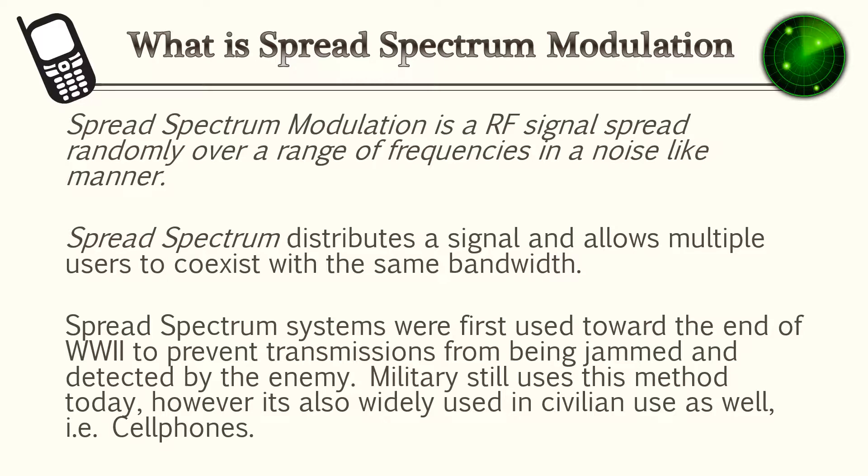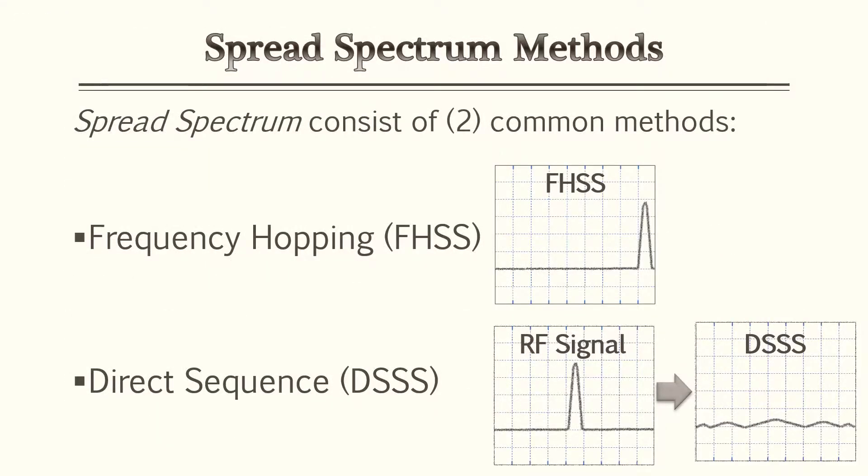The signal is being distributed randomly over the whole bandwidth. In other words, you're making it very difficult for someone to eavesdrop or jam your signal — hence why it was created towards the end of World War Two. It's still used by the military today, and also used for civilian use via cell phones.